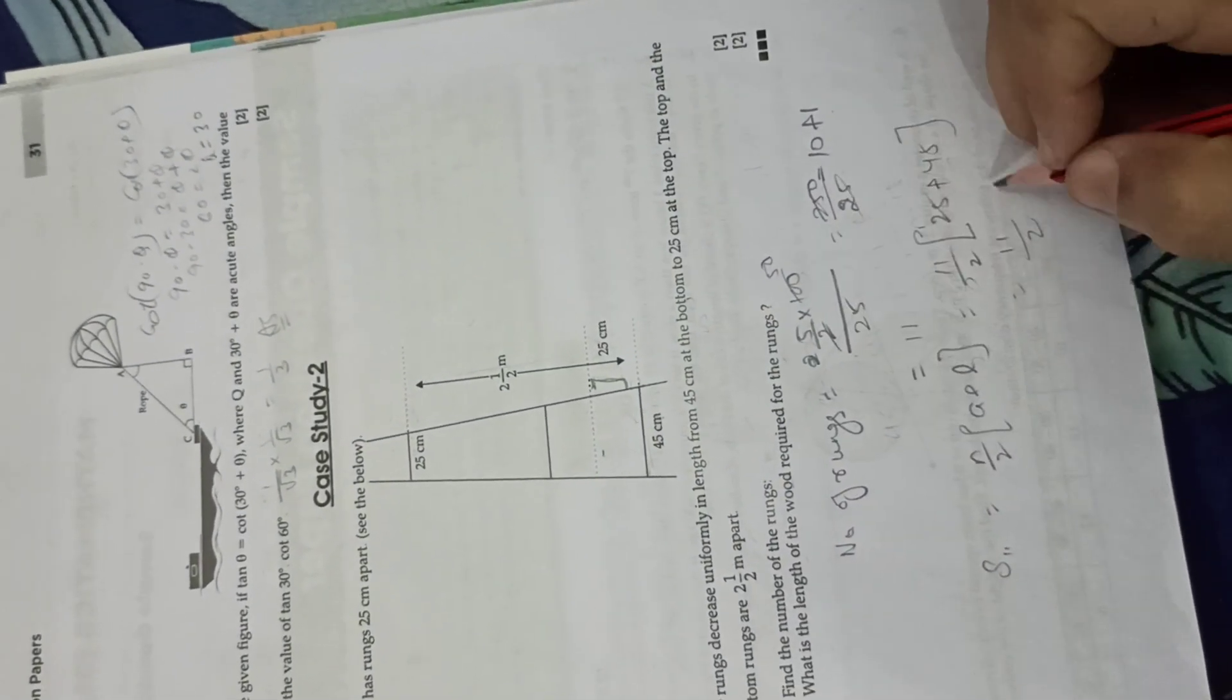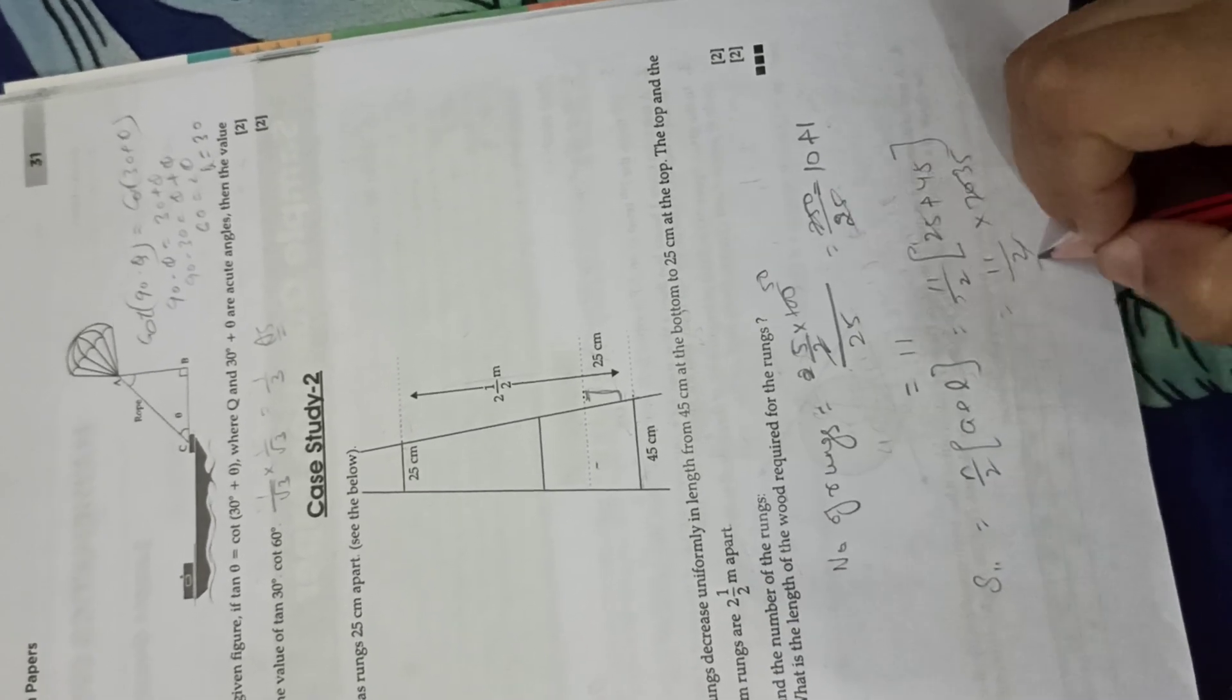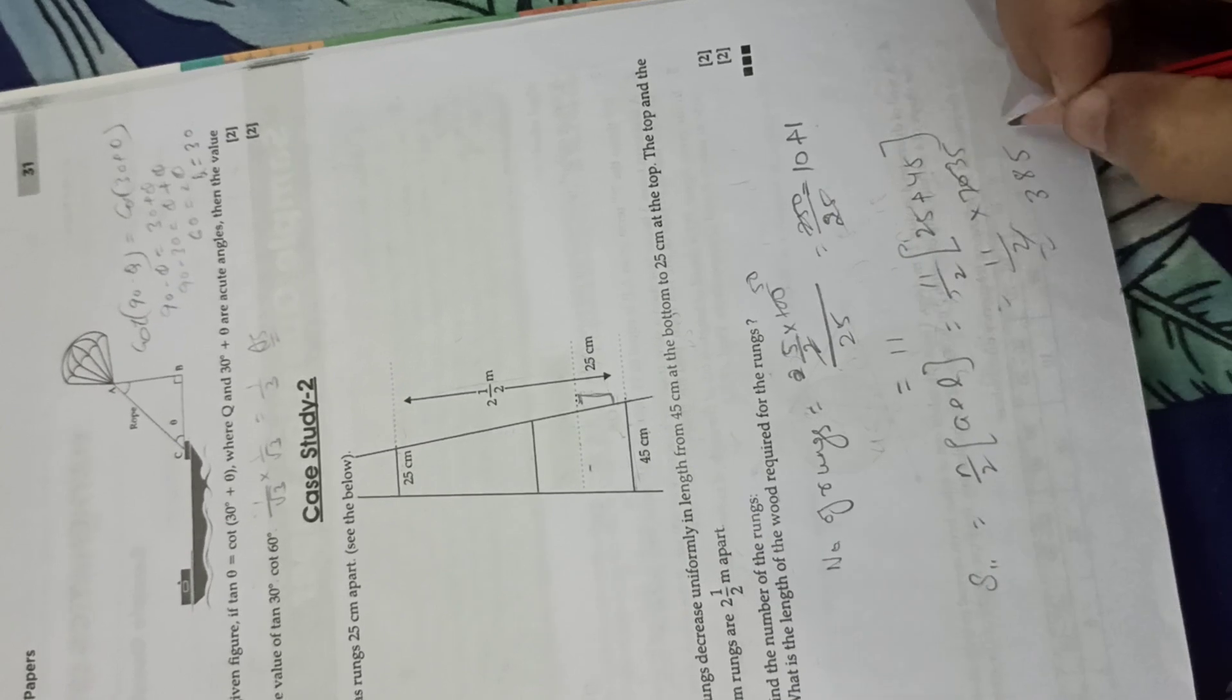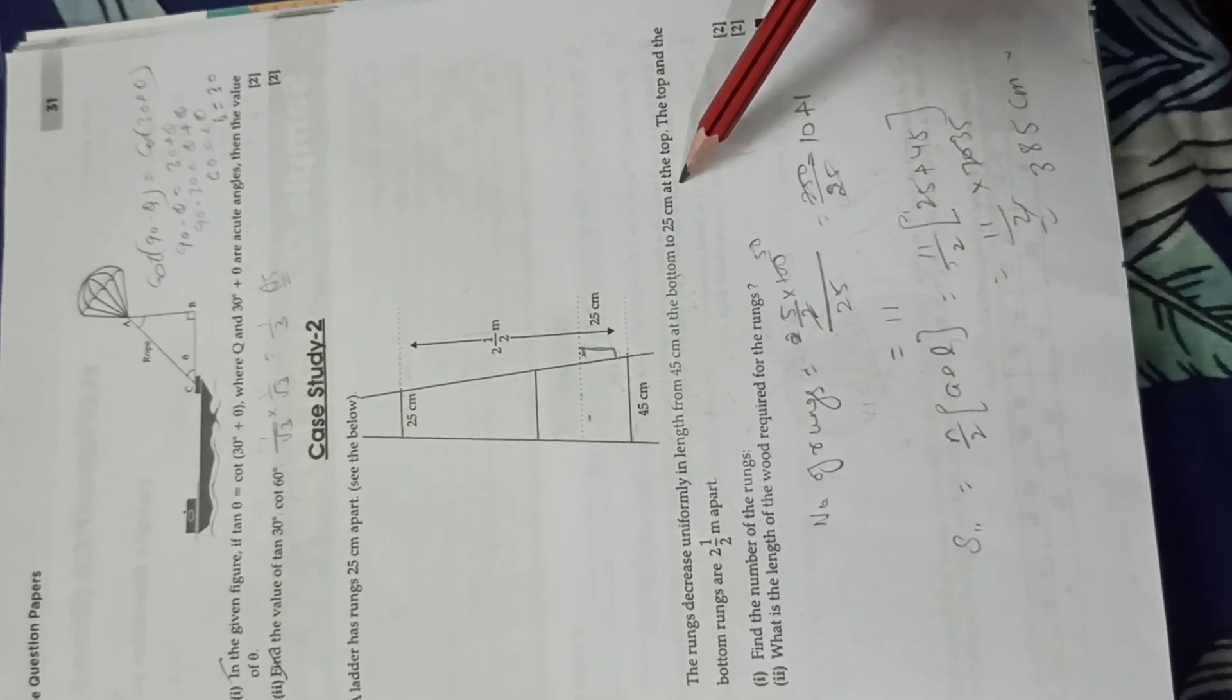So 11 by 2 times 70 equals 35 times 11, which equals 385 cm. This is the answer from the case study sample paper.